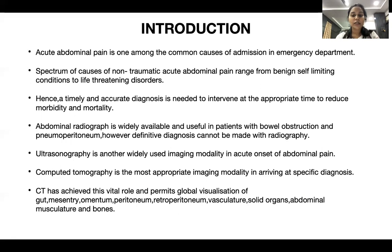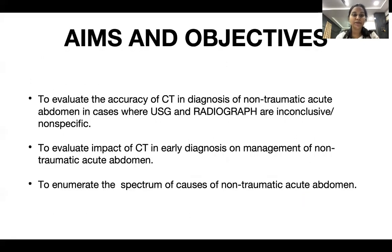However, a specific diagnosis often cannot be made with plain radiography. Ultrasonography is another widely used imaging modality. Computed tomography is the most appropriate imaging modality for arriving at a specific diagnosis. CT has achieved this vital role and permits global visualization of the gut, mesentery, omentum, peritoneum, retroperitoneum, vasculature, solid organs, abdominal musculature, and bones.